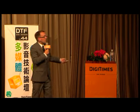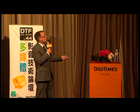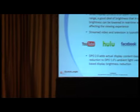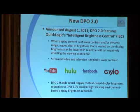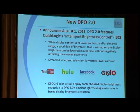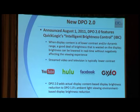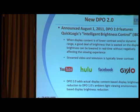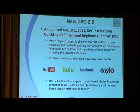When display content is lower contrast or dynamic range, you can lower the brightness of the display without affecting viewability, which saves power. A perfect example of low contrast content is streamed videos — YouTube, Hulu, Facebook videos. When a user is watching that content, we can drop the display brightness even more and save almost 10% more power, by adding display content-based brightness reduction on top of ambient light viewing-based reduction.